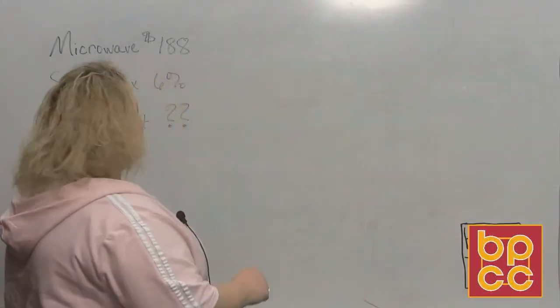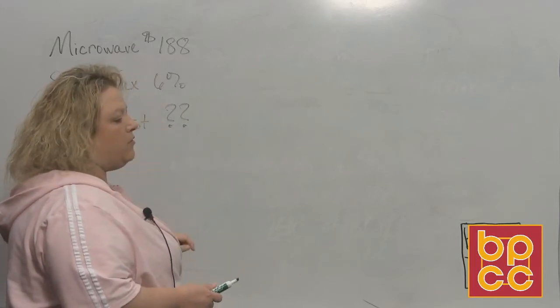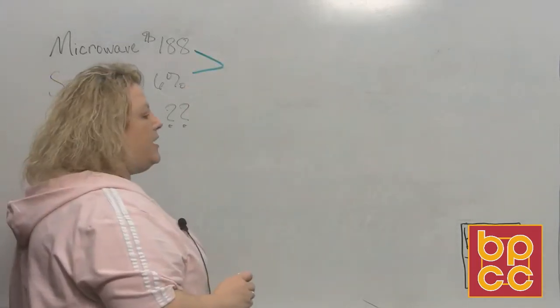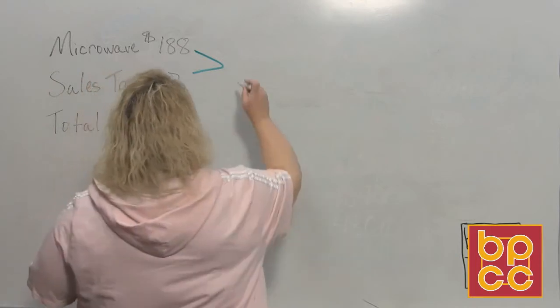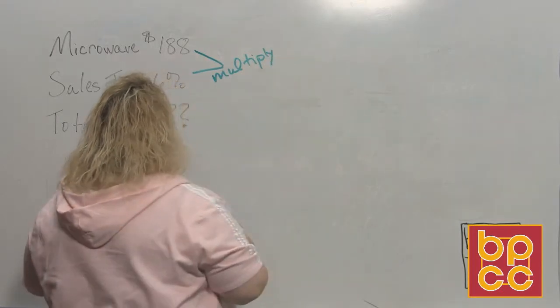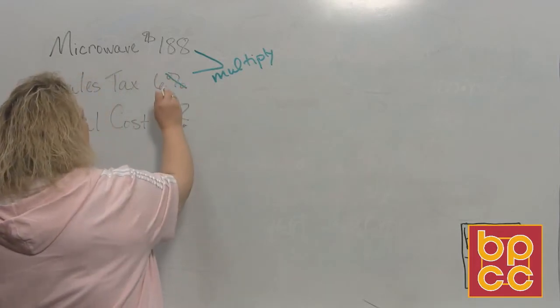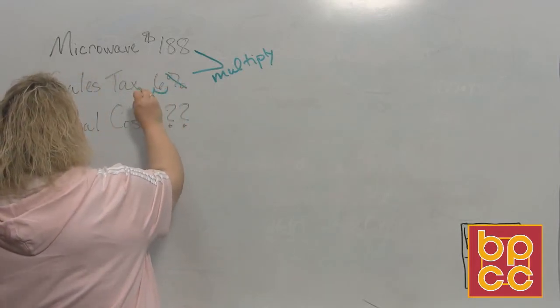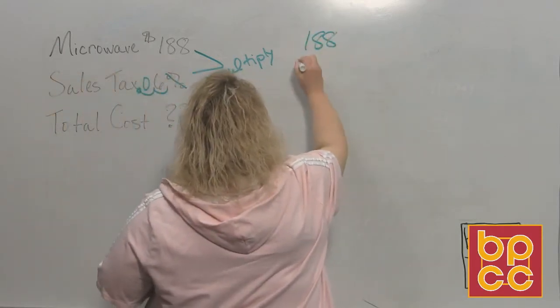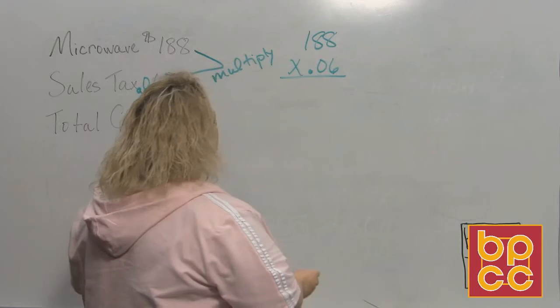Alright, so it says that our microwave oven is $188. The sales tax is 6% and we want to know the total cost. So the first thing we have to do is find out how much tax we're going to pay on this $188. So in order to do this, you must multiply. So we have to turn 6% into a decimal and remember we did that on one of the previous modules. You drop the percent sign and you move the decimal two places to the left. So it would be 0.06.